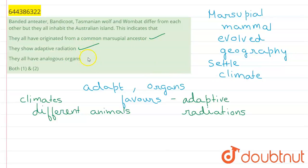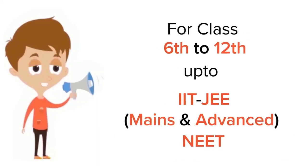All of these animals don't necessarily have analogous organs — they might have analogous organs, but not all of them do. So the first two options are correct. Both option one and option two together form the right answer to this question.